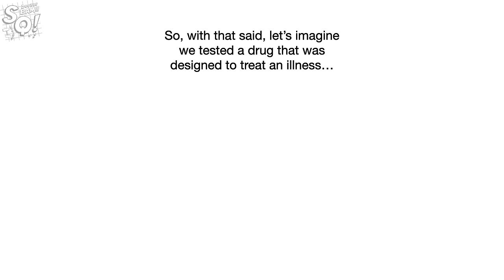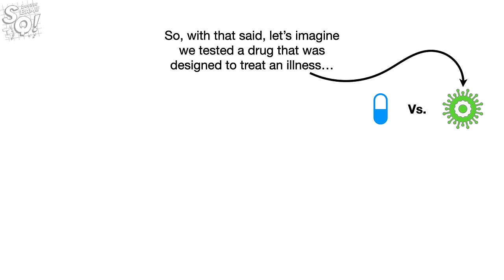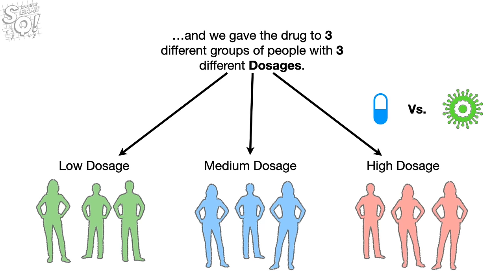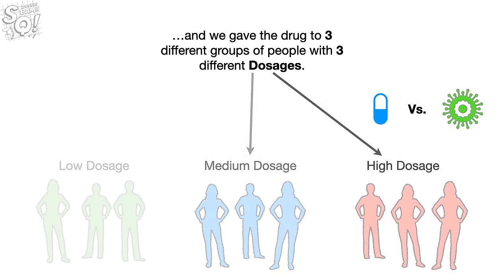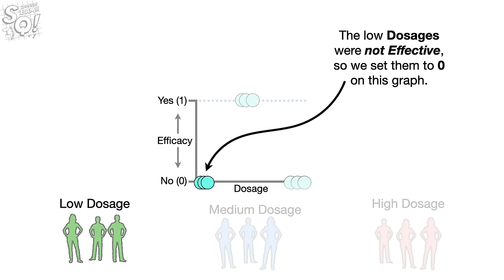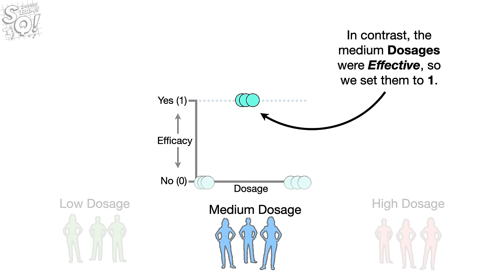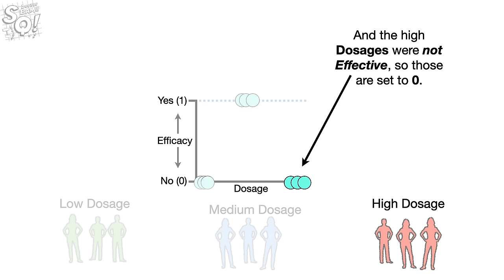Let's imagine we tested a drug that was designed to treat an illness, and we gave the drug to three different groups of people with three different dosages: low, medium, and high. The low dosages were not effective, so we set them to zero on this graph. In contrast, the medium dosages were effective, so we set them to one. And the high dosages were not effective, so those are set to zero.